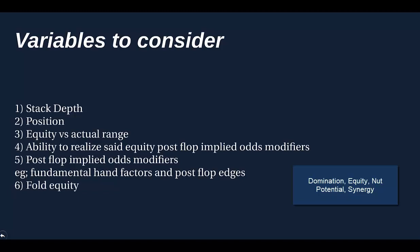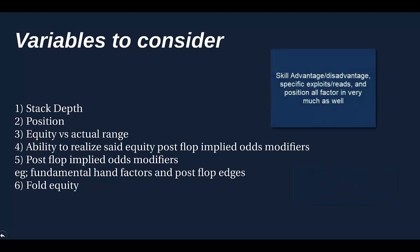Ace-two offsuit is actually an equity favorite against king-queen, but is it going to be profitable against king-queen? I would say most of the time it's not — unless it's a preflop shove/reshove situation where fold equity and raw equity are the only things that really matter. The synergy a hand has allows it to actually realize more of its equity. King-two offsuit against many hands will have more raw equity than nine-eight suited, but it just won't realize that equity — it gets dominated too often and rarely flops a hand you're happy to play for stacks.